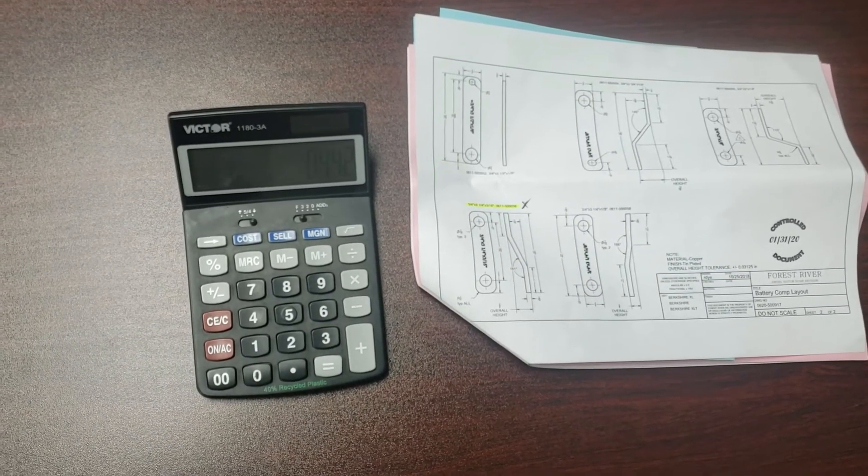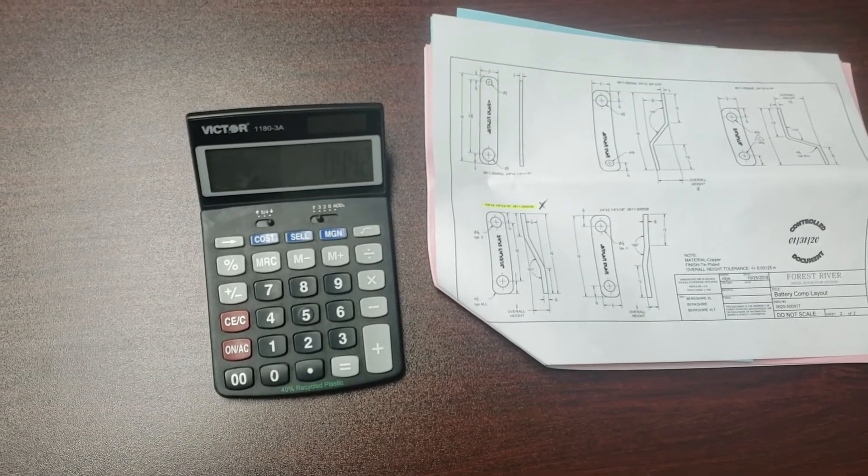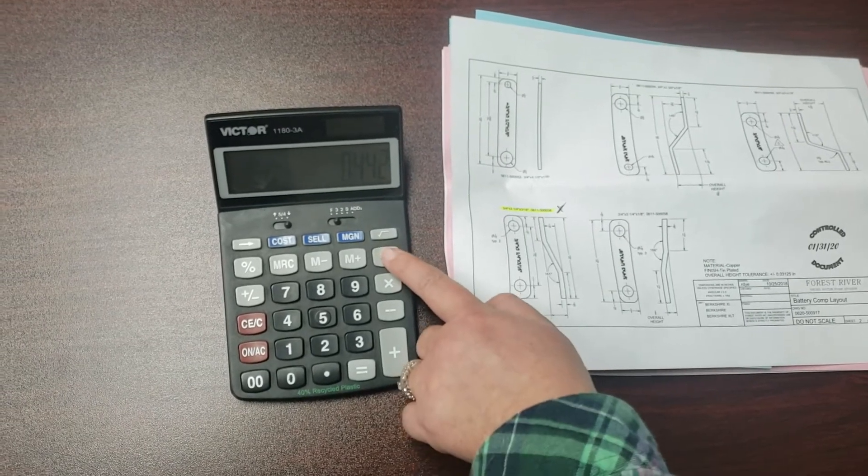Since we cannot accurately make measurements eyeballing, the next step involves dividing the number that you keyed into the calculator by 2.